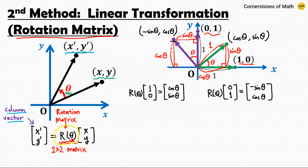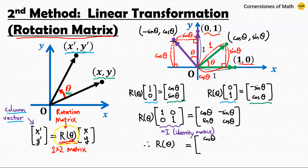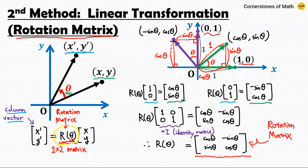From these results, we can write R(theta) times the identity matrix (combining column vectors as [1, 0; 0, 1]) equals the matrix [cosine theta, −sine theta; sine theta, cosine theta]. Since the left-hand side is simply R(theta), we have R(theta) = [cosine theta, −sine theta; sine theta, cosine theta]. This is the rotation matrix for rotating around the origin counterclockwise by angle theta.